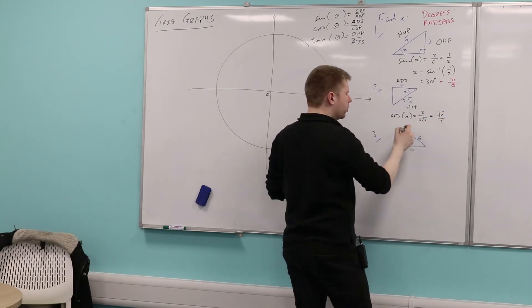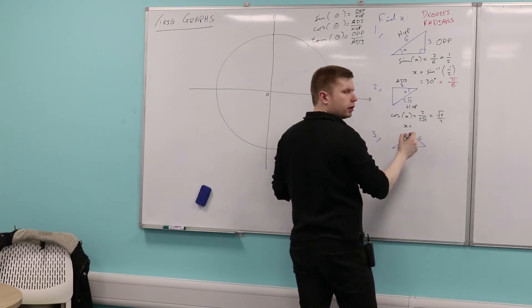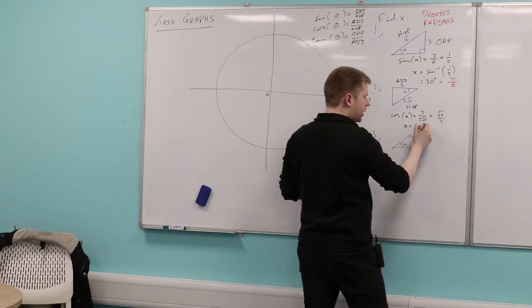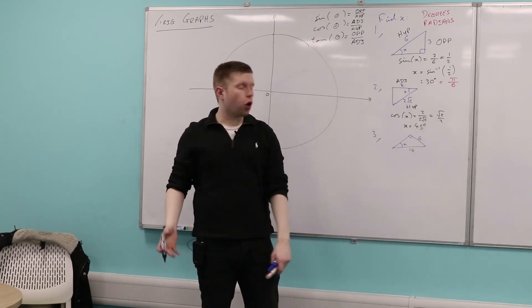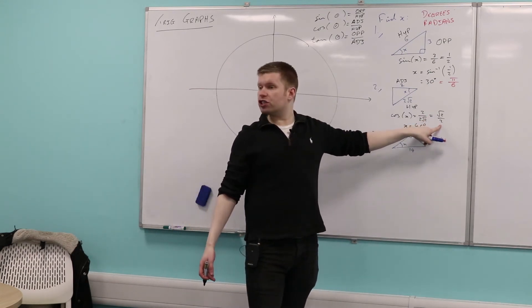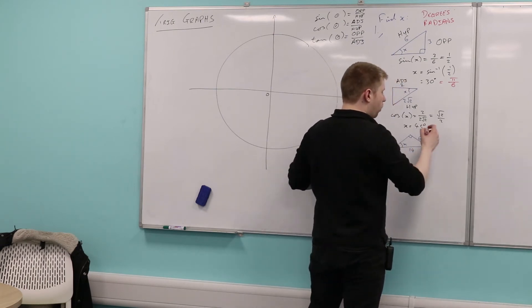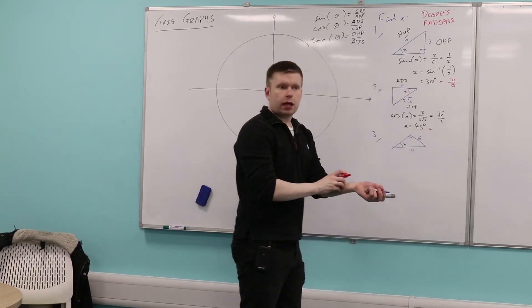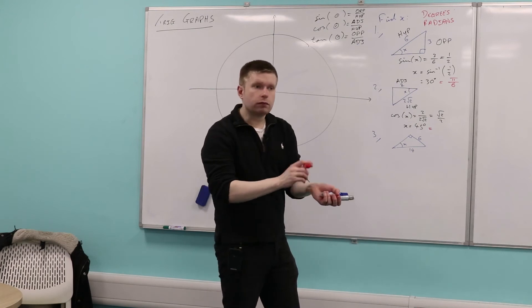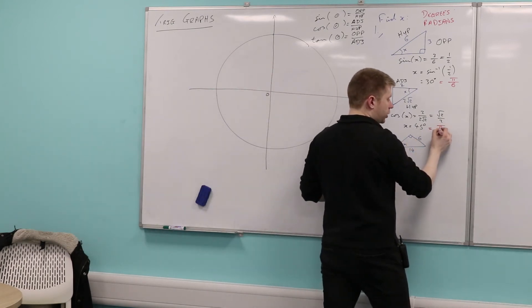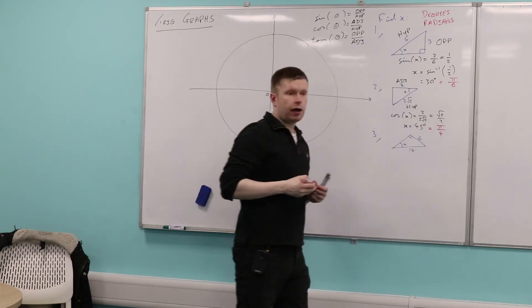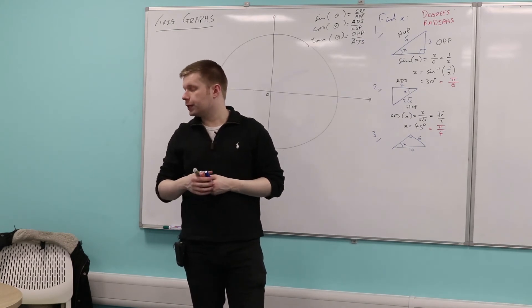Can anybody remember what angle should that be? It's 45 degrees. So it's a special angle. Again, if you weren't sure, you could just go cos inverse of that and it will also give you 45. Just for the sake of completeness, what would this be in radians? Pi over four. Perfect. You should take 180 degrees, dividing it by four to get to 45. Therefore, it should be pi divided by four radians.